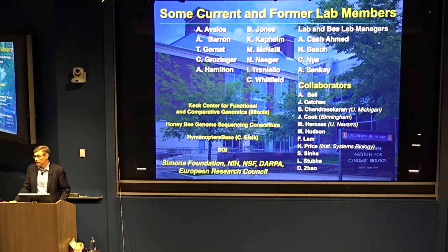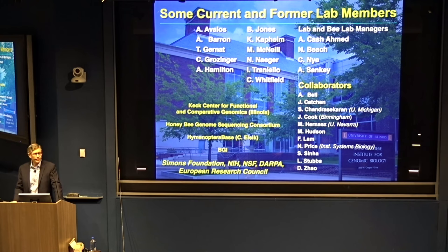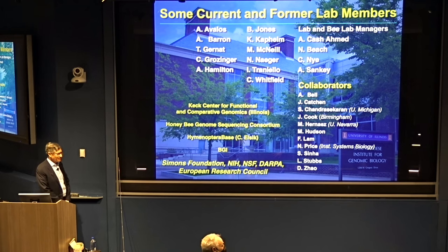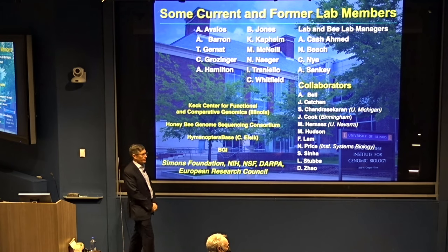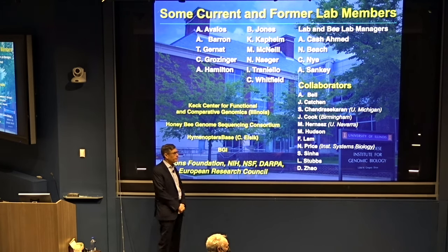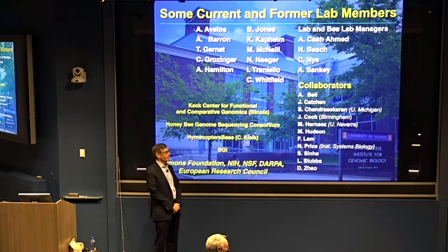Do those genes also have roles in neural development? I wouldn't be shocked at all. The neural ligand hit associated with social unresponsiveness is of course known for synapse development. Are there sex-specific differences between nurses and foragers? A key point I should mention: in ants, bees, and wasps, the workers are all female. The queen is female and workers are female. Males exist but their only known function is to mate with virgin queens.